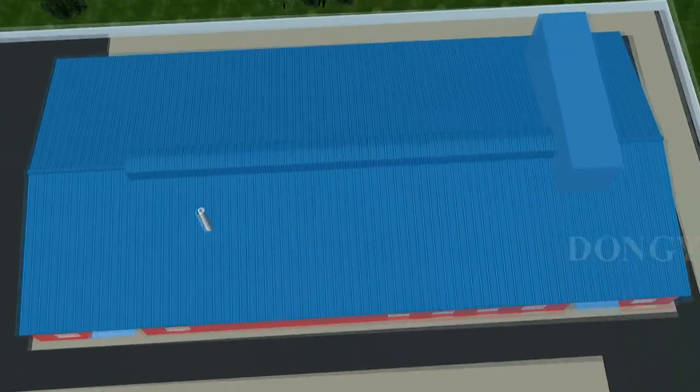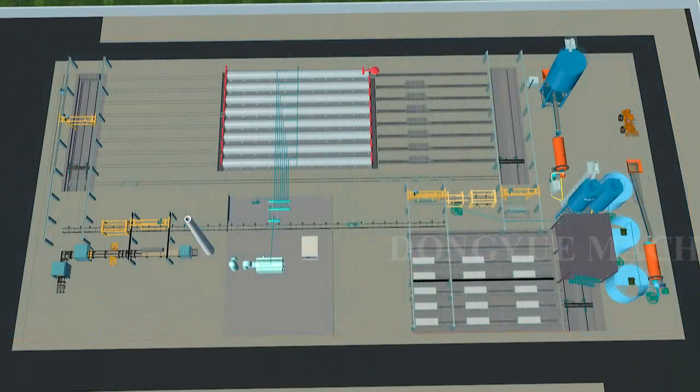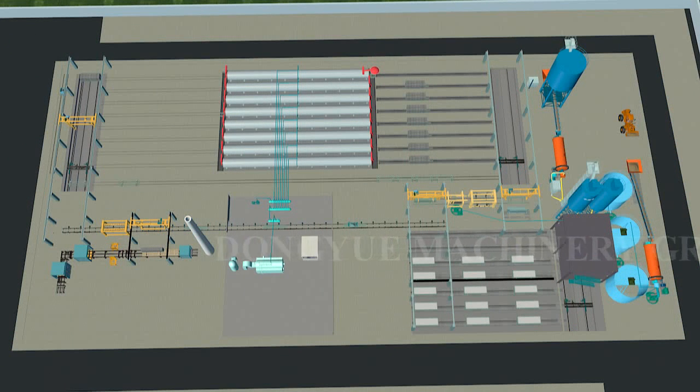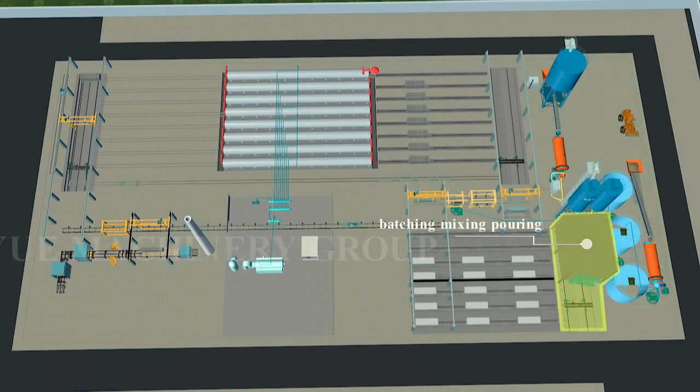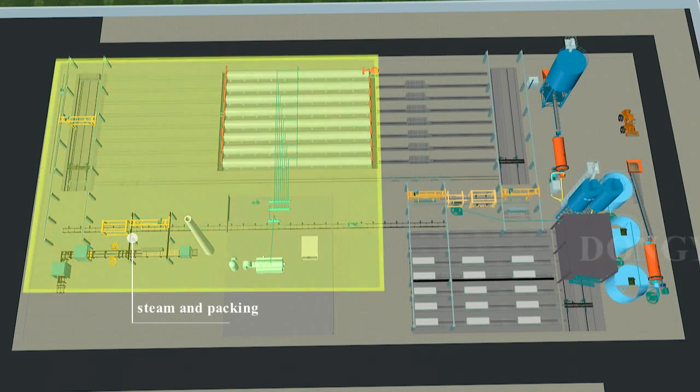AAC Block Machine Working Processes are divided into five parts: the preparation and storage of raw material, batching, mixing, pouring, curing, cutting, steam, and packing.